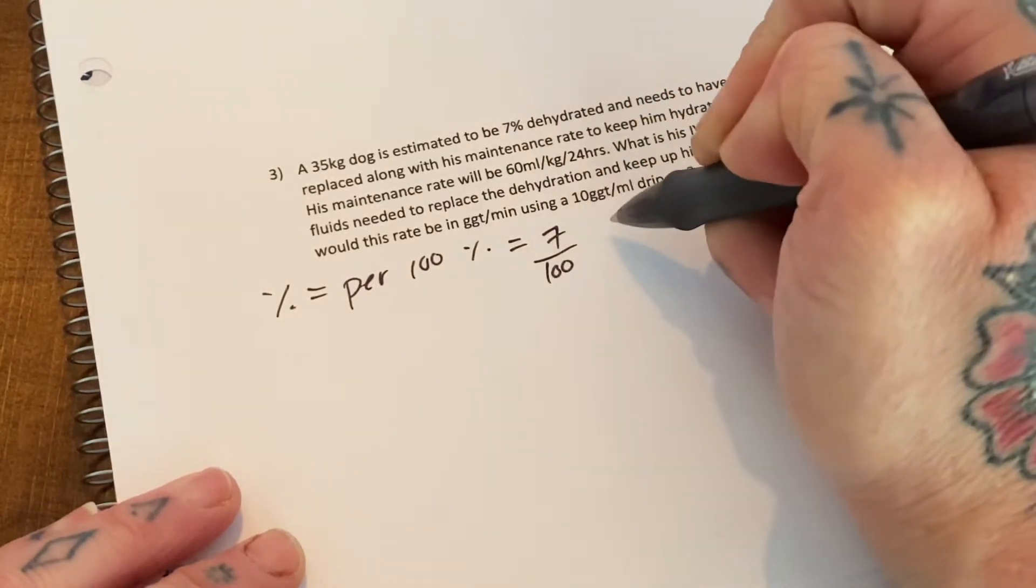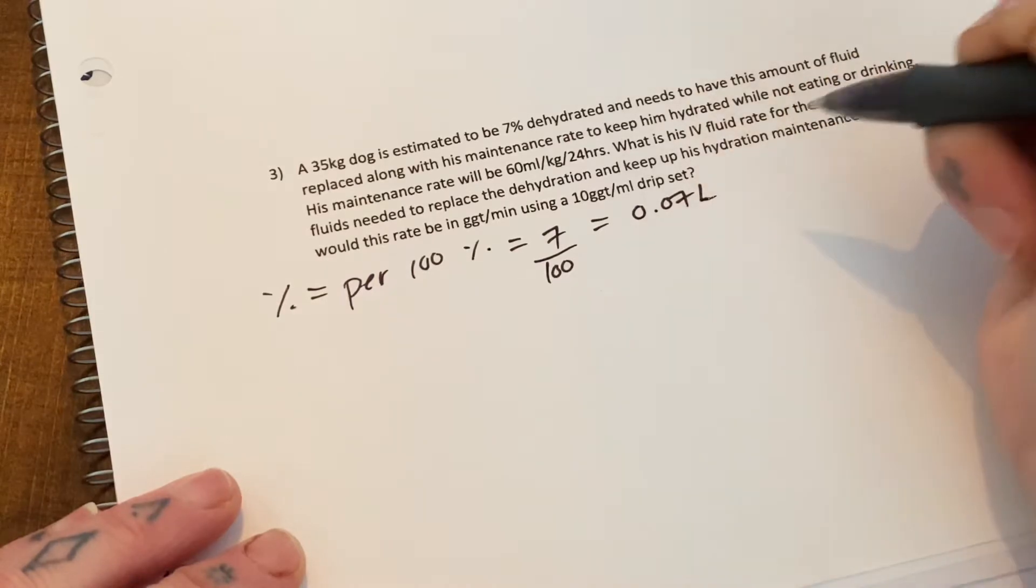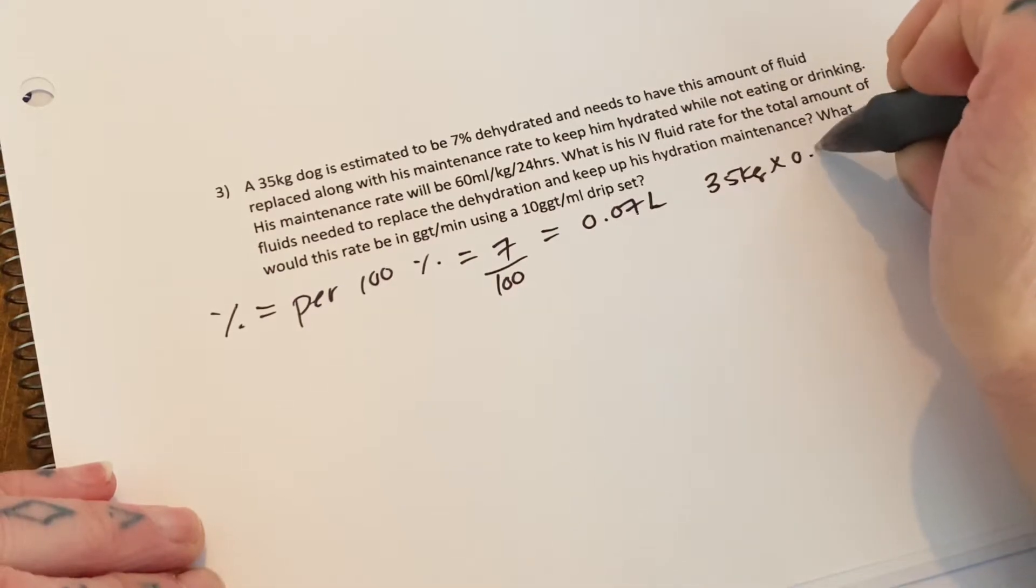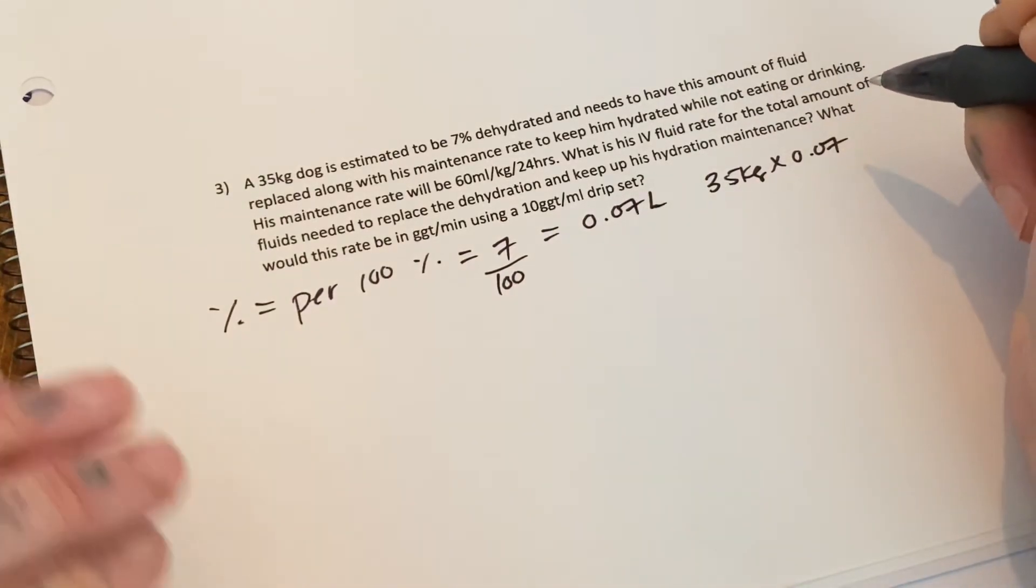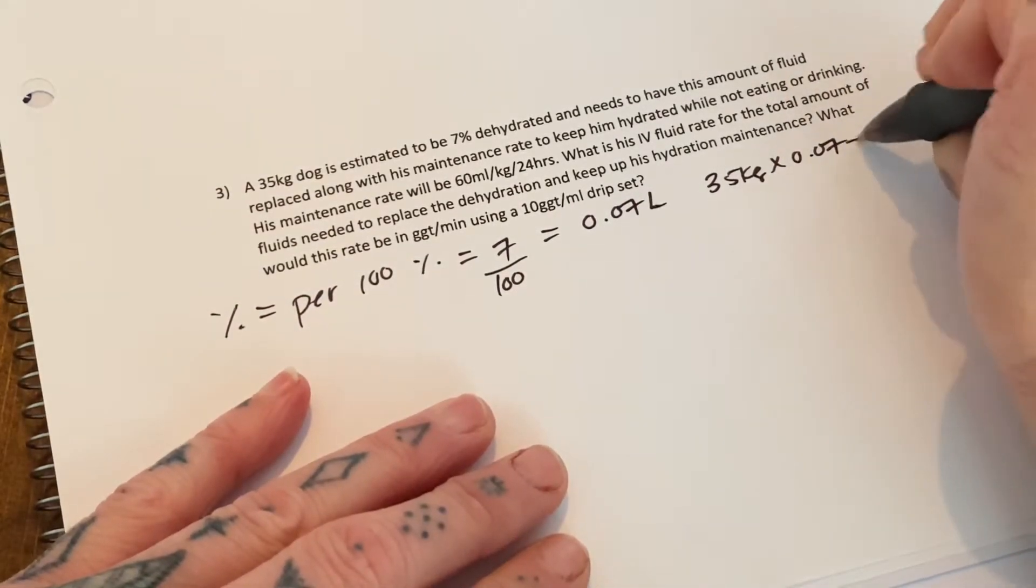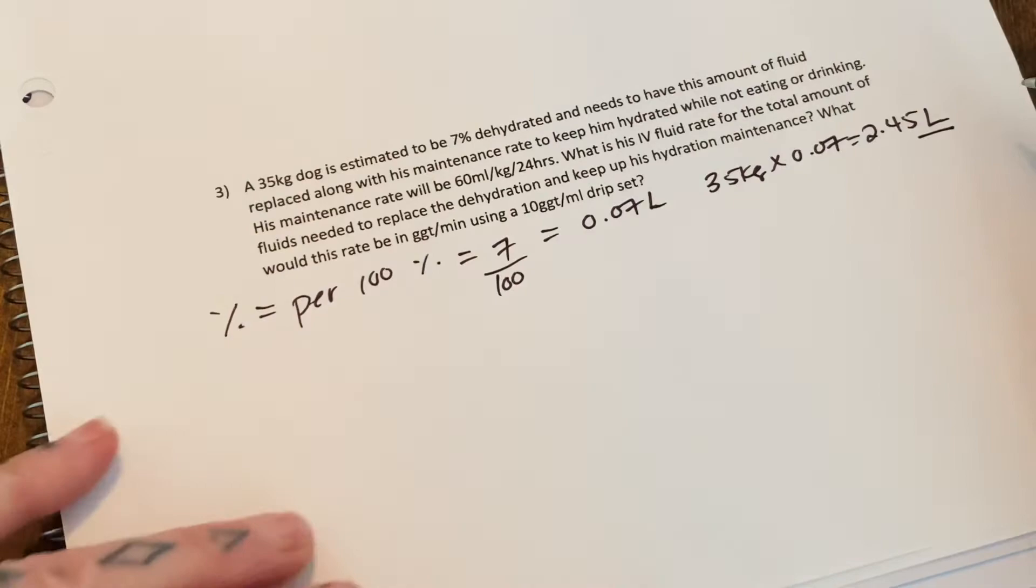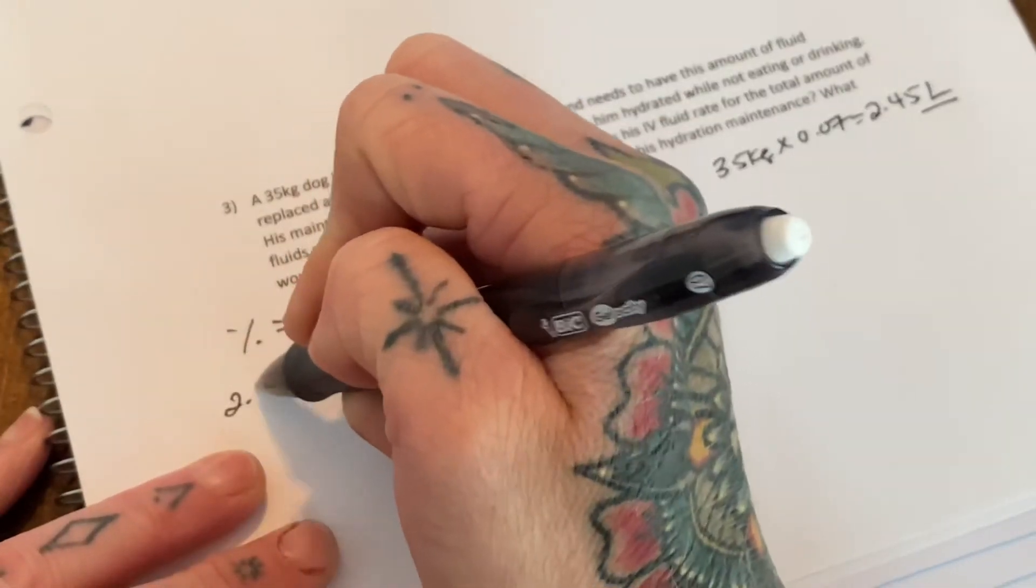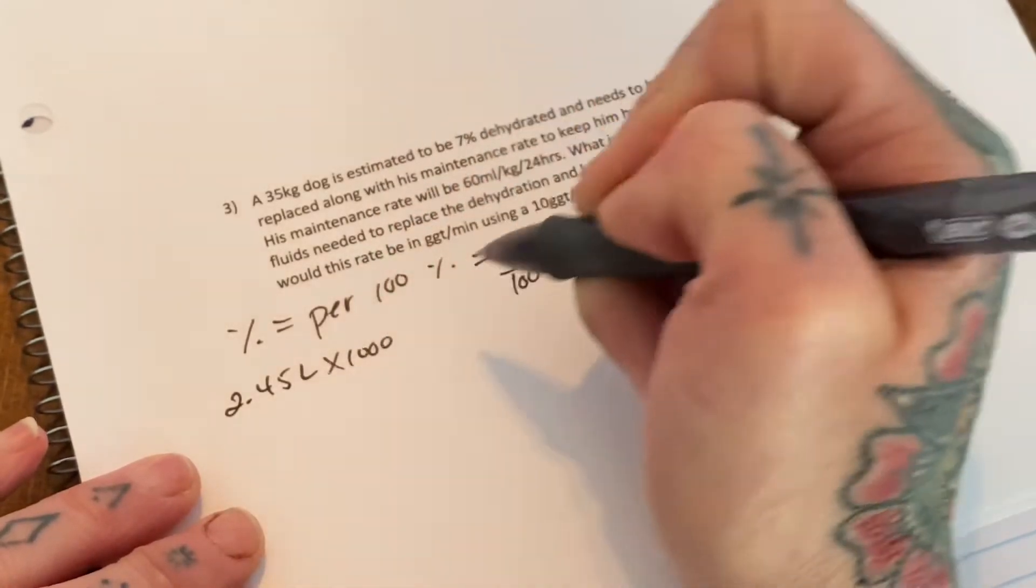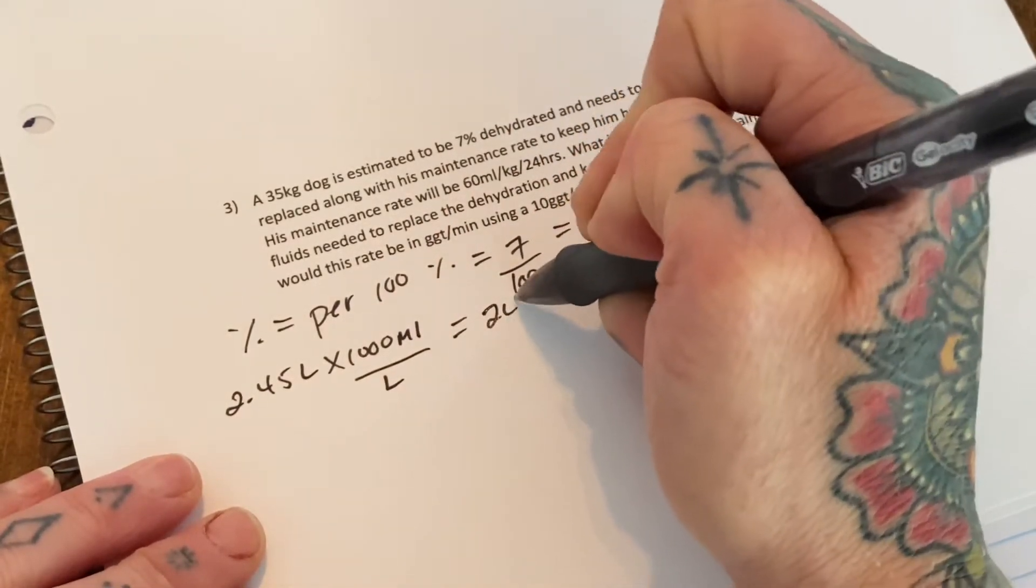So seven percent would equal seven divided by 100, so that's going to equal 0.07 and this is actually liters. So if we times a 35 kilogram dog times 0.07 which is seven percent, we're going to get 2.45, so 2.45 is liters and that's where I think a lot of people go wrong. This 2.45 liters into milliliters is going to be times a thousand because there's a thousand mils per liter, so this actually equals 2,450 mils.